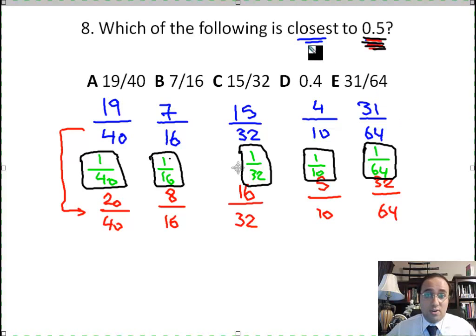Now, I want the closest number to 0.5. That means I want the fraction with the least difference, because I'm looking for the fraction that is closest to 0.5. Now, which of these in green is the least? Which of these differences in green is the smallest? Well, when you have a 1 in the numerator, they're all common. They all have the same numerator, which is 1. Then the smaller number or the smallest number is the one that has the biggest denominator. So the answer would be 1 over 64. Because 1 over 64 is much smaller than 1 over 10 or 1 over 32 or 1 over 16 or 1 over 40. So the smallest difference is here, 1 over 64, meaning that the answer E, 31 over 64, is the closest answer to 0.5.